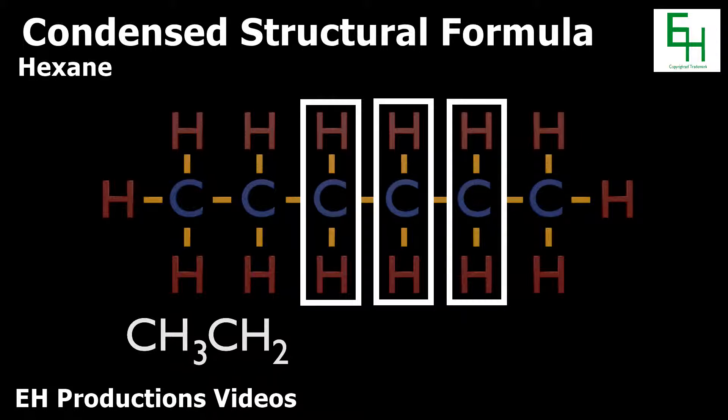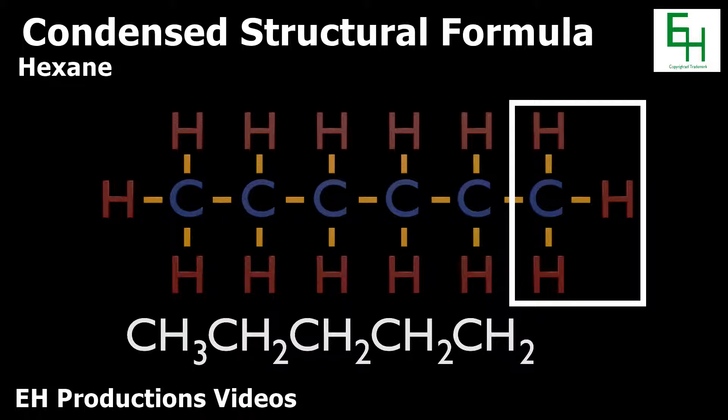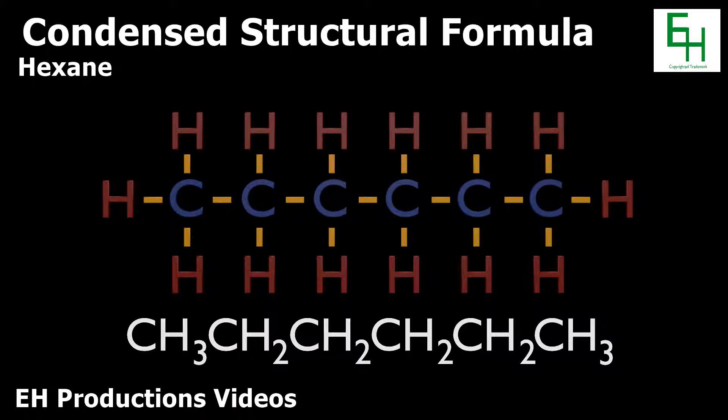The next three carbons are also bonded to two hydrogens, so we write CH2CH2CH2. And because our last carbon atom is bonded to three hydrogens, we finish it up by writing CH3. So our final product is CH3CH2CH2CH2CH2CH2CH3.